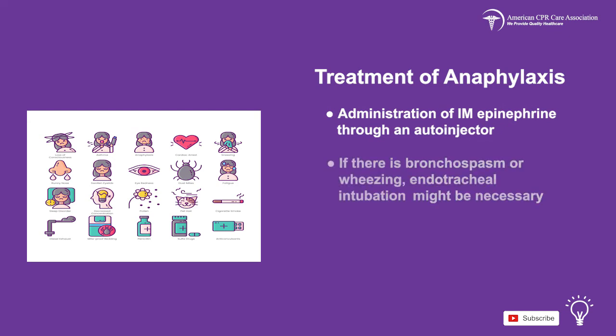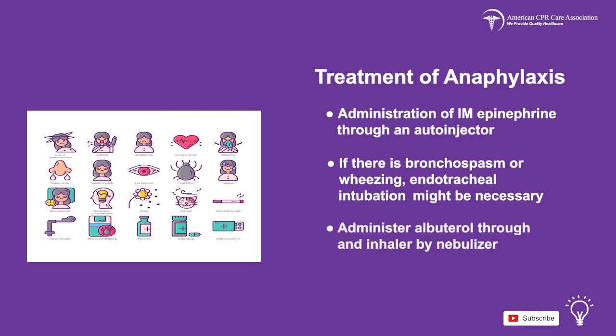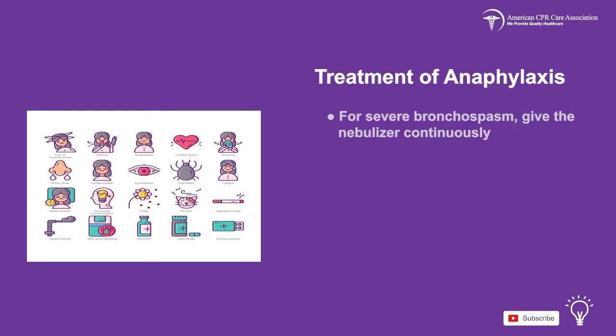If there is a bronchospasm or wheezing, endotracheal intubation might be necessary, along with albuterol administration through an inhaler or by nebulizer. For severe bronchospasm, give the nebulizer continuously.